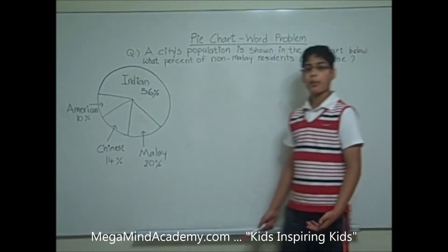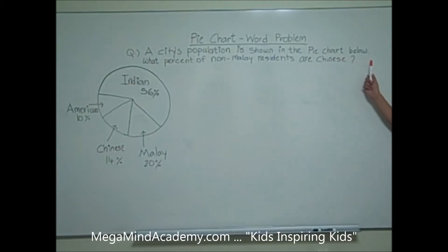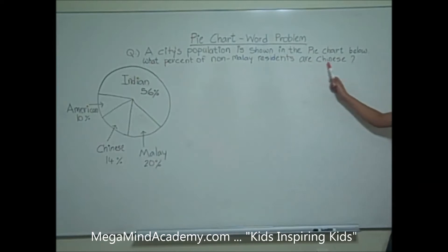Let's say we have a problem like: a city's population is shown in the pie chart below. What percent of non-Malay residents are Chinese?